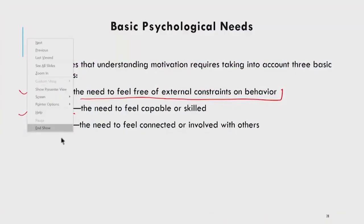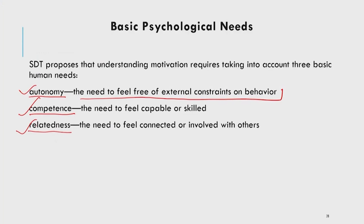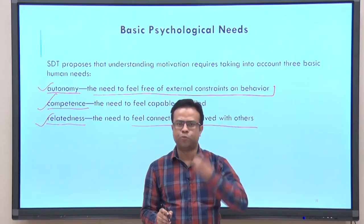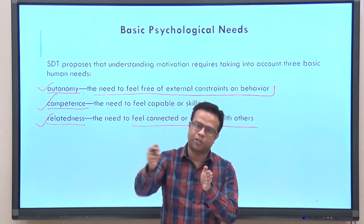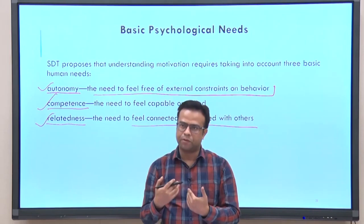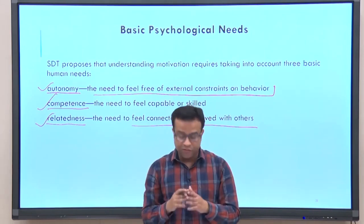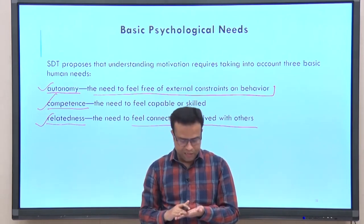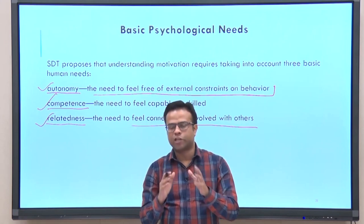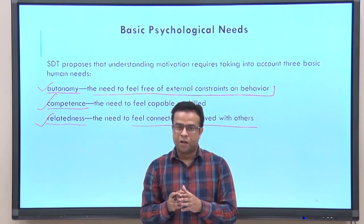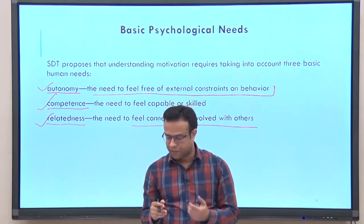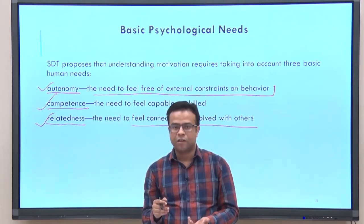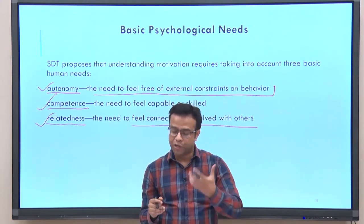The need for competence is about the need to feel capable or skilled. All human beings want to feel competent in whatever things they are doing. Nobody can be competent in everything, but whatever we do in life, we want to feel capable of doing it. The need for relatedness is the need to feel connected or involved with others — a very fundamental need since we are social animals with a basic need for good relationships and support from others.